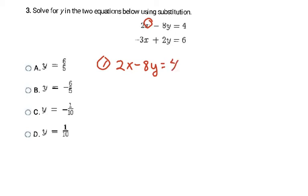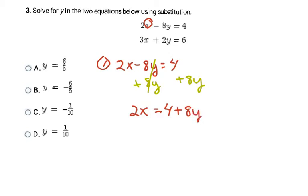The first thing I'm going to do is add 8y to both sides, which cancels out the -8y and leaves 2x = 4 + 8y. Now I divide every term by 2 to get x by itself. The 2s cancel, leaving x = 2 + 4y. So step 1 is done — I have x all by itself.